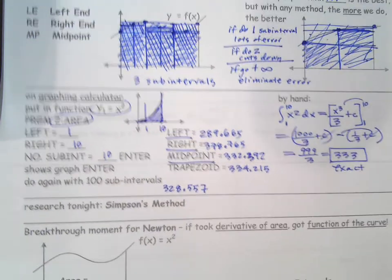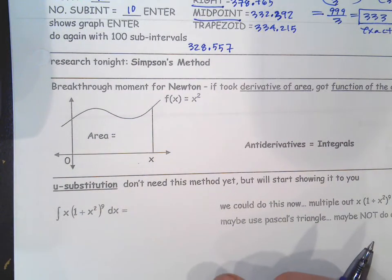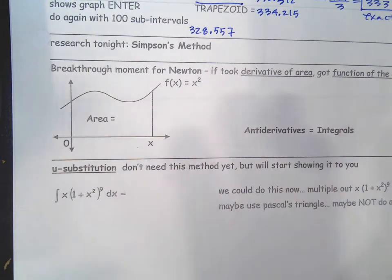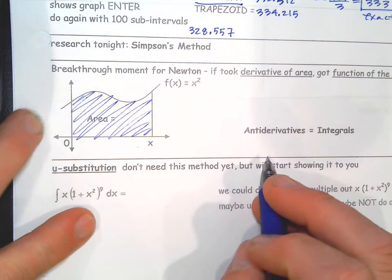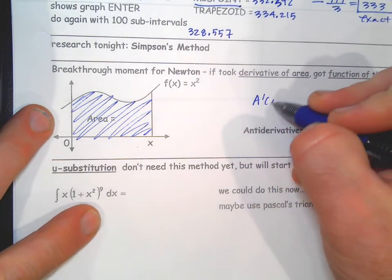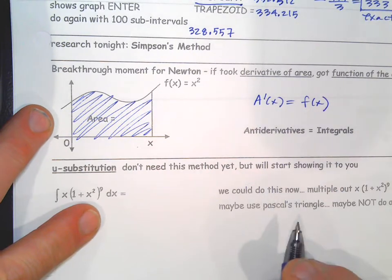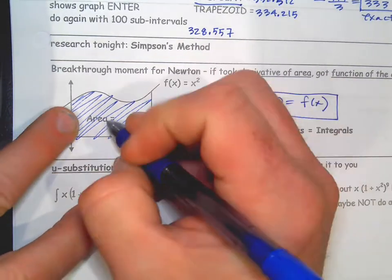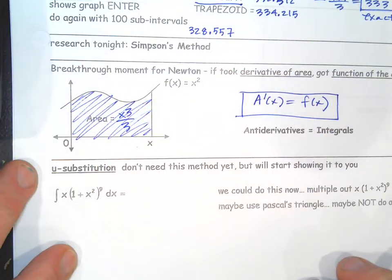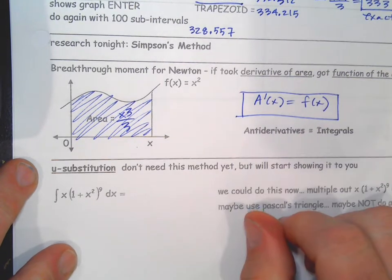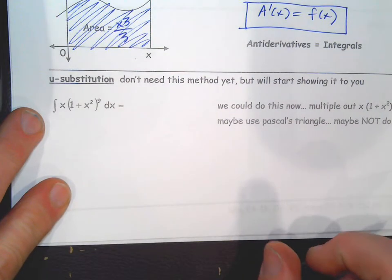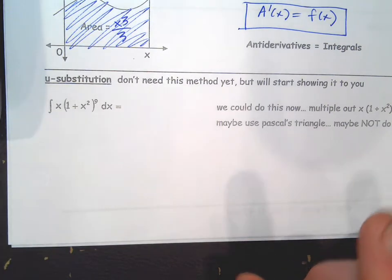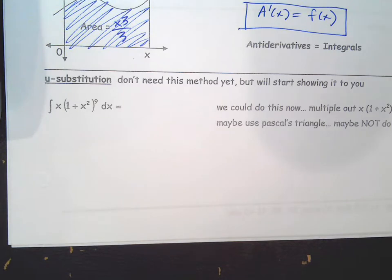But there's another way called Simpson's method. You guys can check that out on your own if you like tonight. There's lots of different ways to try and estimate the area. Now, just to reiterate, we were talking about this the other day. You want to find the area under curve. Newton discovered that the derivative of the area formula was equal to the original function of the curve, which is a huge deal. So this area formula is going to be x cubed over 3. What would you take if you undo the derivative, you get the area formula. So that's a big deal.